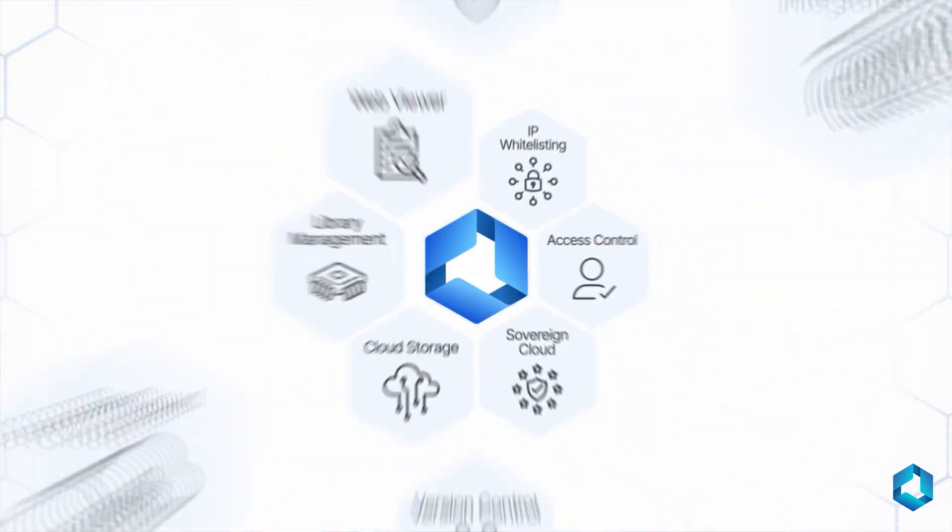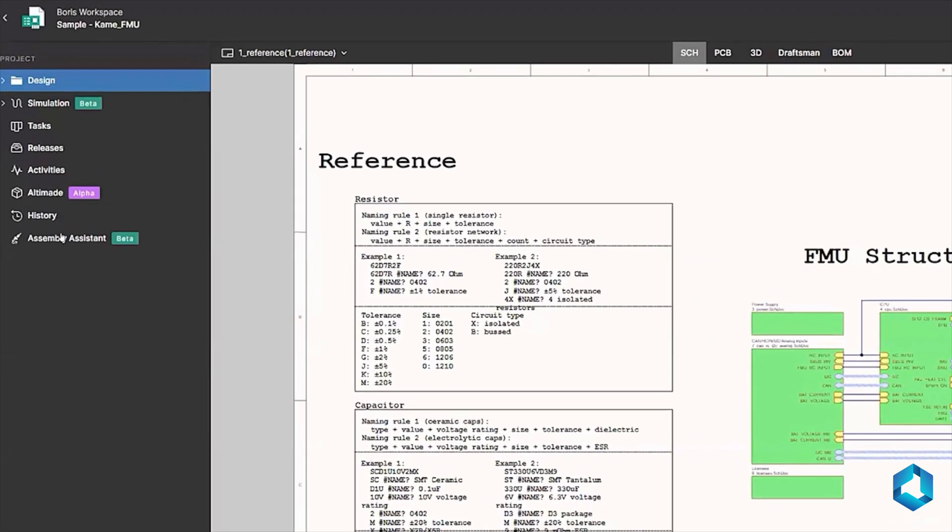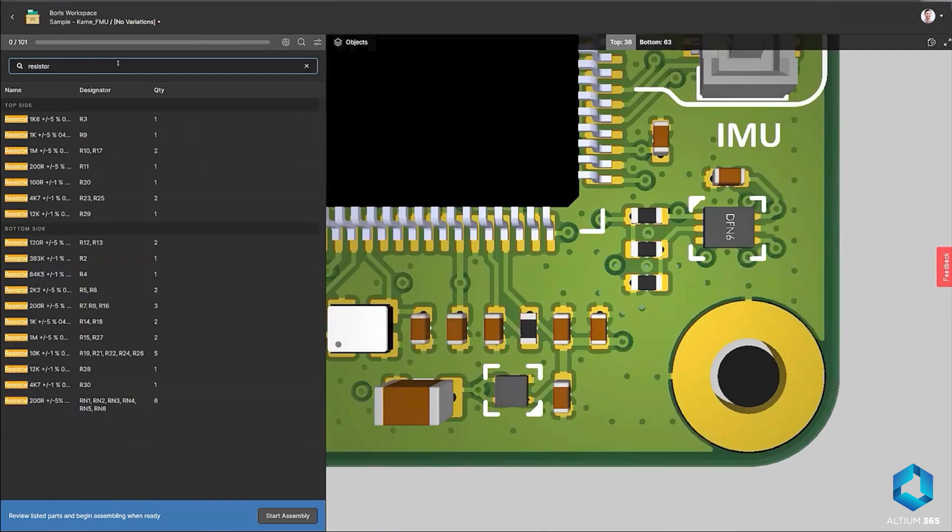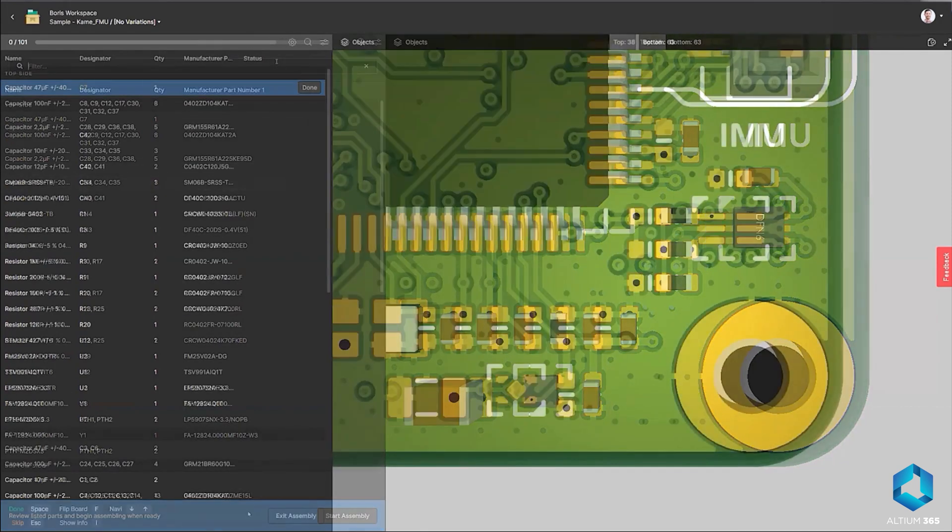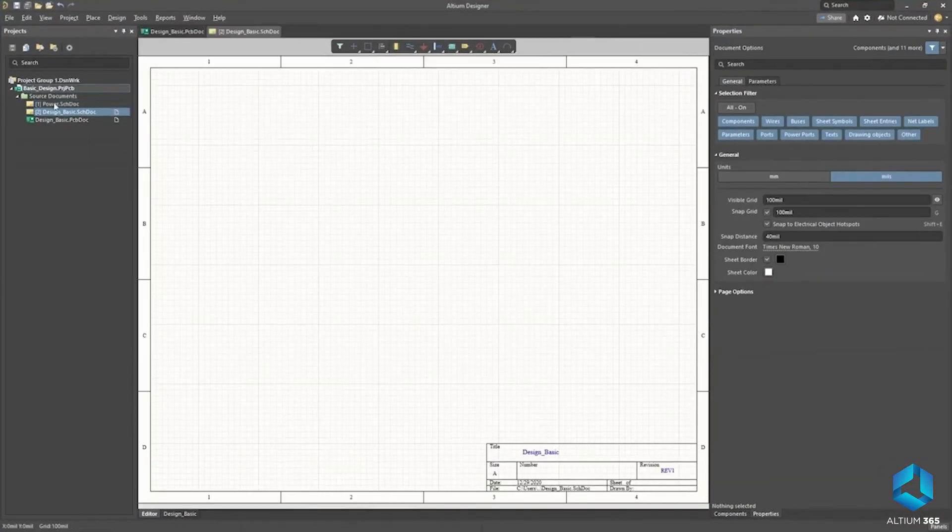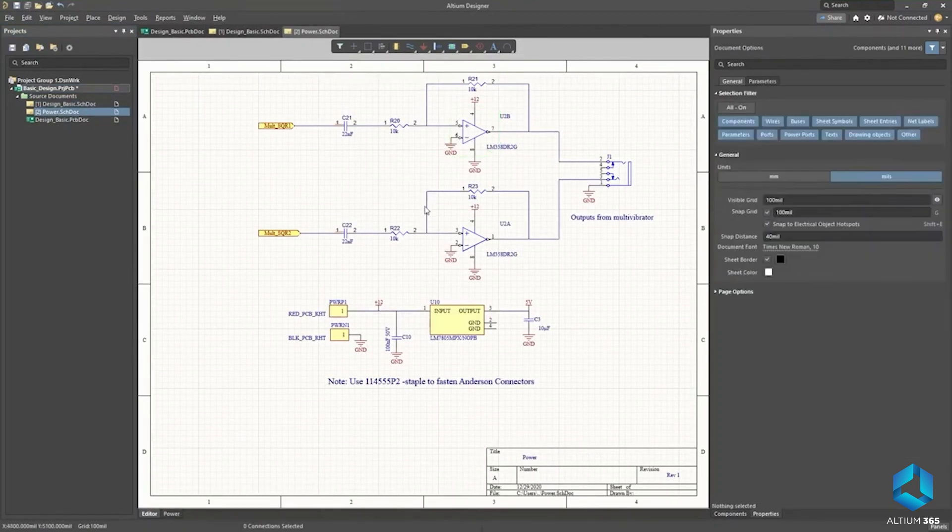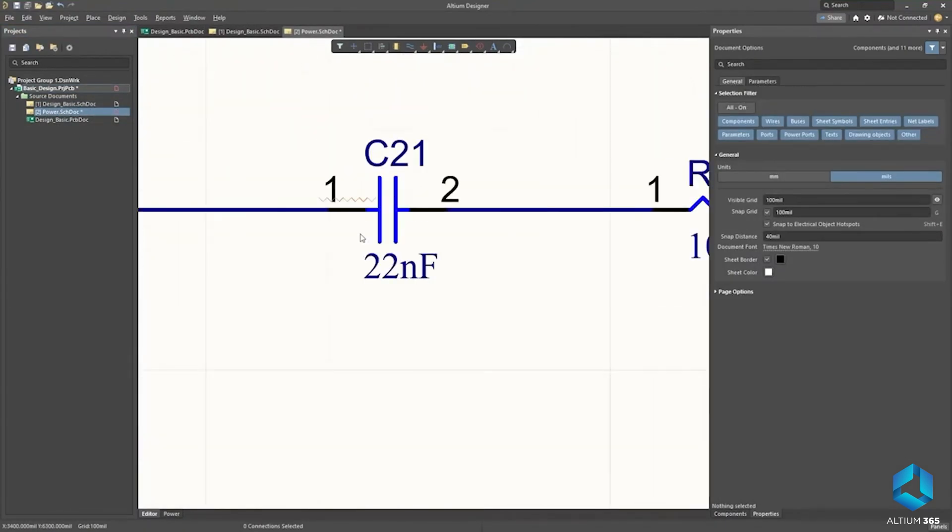If you ever felt stuck between your circuit ideas and an actual working PCB, then let me introduce our partner of today's video, which is Altium. Altium Designer is a complete PCB design tool where we capture schematic, design PCB layout, run simulations and create manufacturing ready electronic circuits all in one software. It starts with schematic capture, where we transform our paper circuit to a proper design, which is ready for simulation and layout.